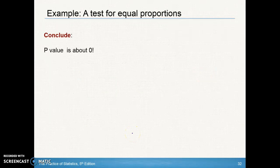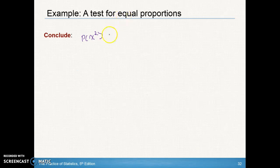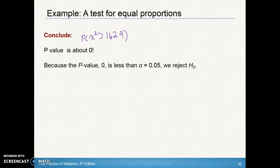So now let's make our conclusion. First, make sure you find your p-value, and make sure you state your probability statement. So we want to state that the probability that chi-square is greater than that number from the previous page of 162.9. So don't forget to include that. And that p-value from your graphing calculator is about zero.